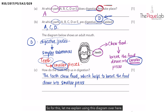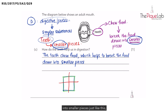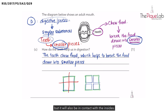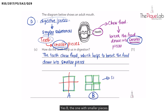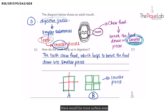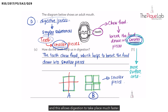Let me explain using this diagram. If we have a big chunk of food and don't chop it up, the digestive juices will only be in contact with the outer area. But if I chop the food down into smaller pieces, the digestive juices will be in contact not only with the outside but also the insides, covering more area. Which diagram — A or B — would digestion take place faster? Yes, B — the one with smaller pieces — because there is more surface area in contact with the digestive juices.